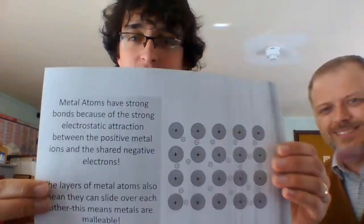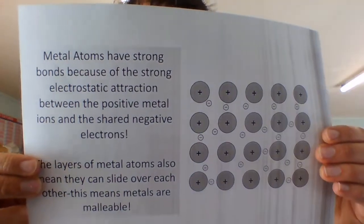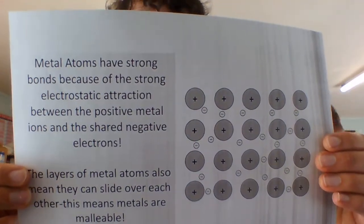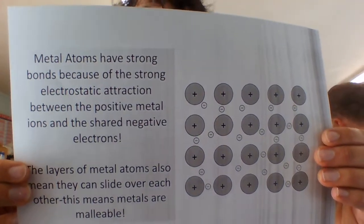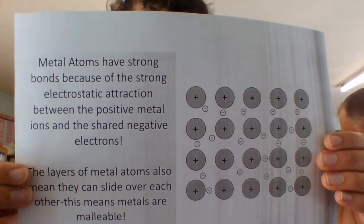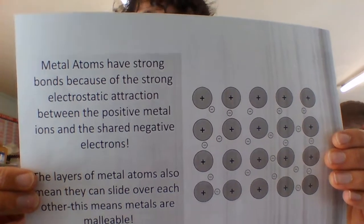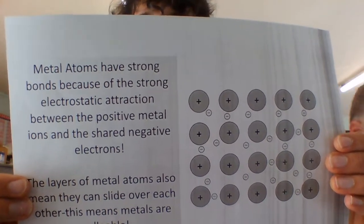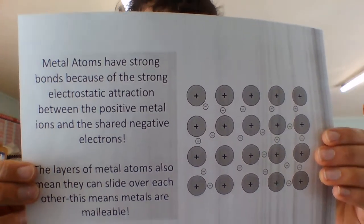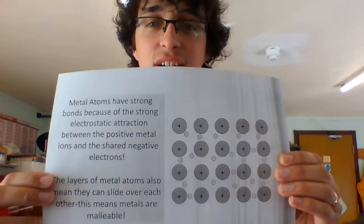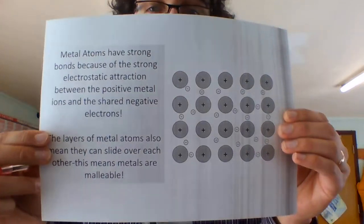The idea being that metal atoms have strong bonds because of the strong electrostatic attraction between the positive metal ions and the shared negative electrons. Yay!